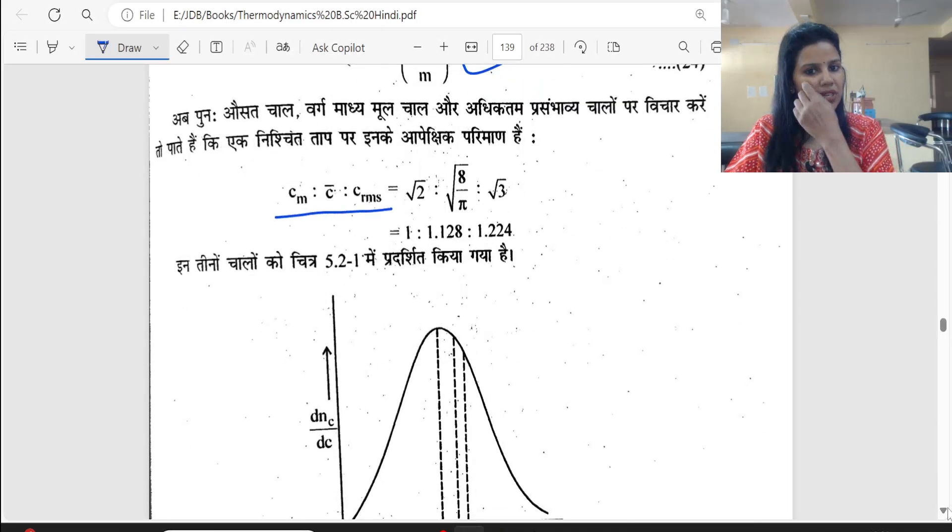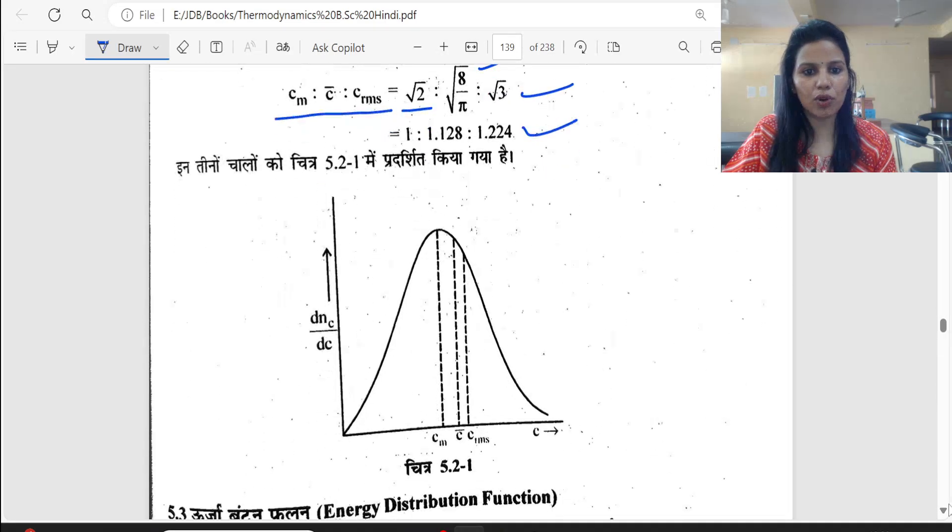Now if we look at the ratio of these three - Cm, C bar, and C rms - they are in the ratio root 2, root 8 upon π, and root 3. In numbers, this is 1, 1.1, and 1.2.